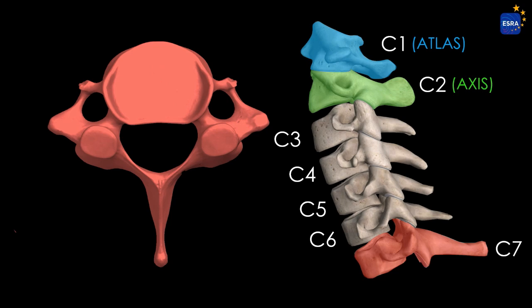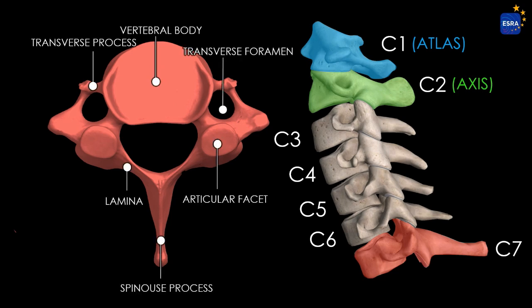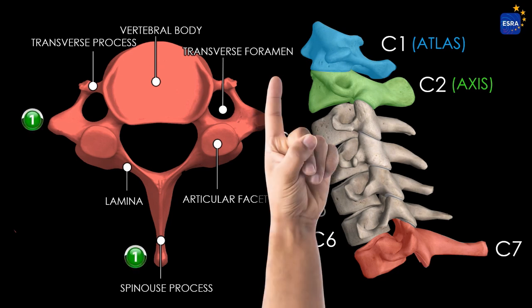The C7 vertebra, referred to as the vertebra prominens, more closely resembles a thoracic vertebra in size and form. It is characterized by a long, prominent, and typically non-bifid spinous process, making it easily palpable at the base of the neck and a reliable surface anatomical landmark. The transverse foramen of C7 is usually smaller and typically does not transmit the vertebral artery, which generally enters the cervical spine at C6. These structural differences reflect the functional adaptations: C1 for cranial support, C2 for axial rotation, and C7 as a transitional segment providing enhanced structural stability.